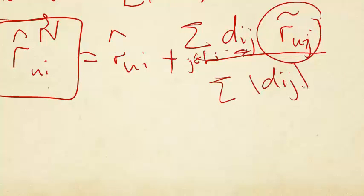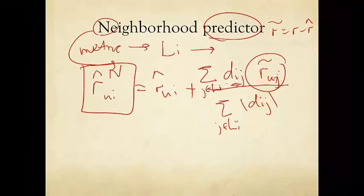The weights can be, it's just dij absolute, summing over j in the neighborhood for movie i, ri.